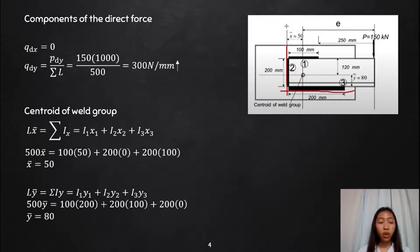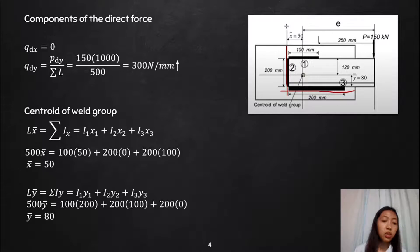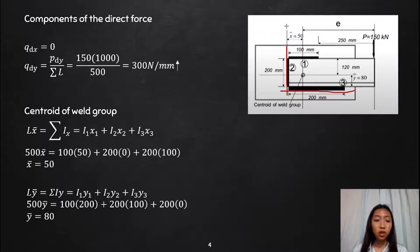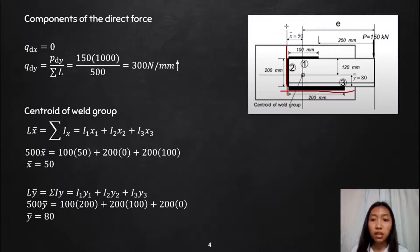In terms of y: L × ȳ = ΣL_i × y_i = L₁y₁ + L₂y₂ + L₃y₃. So: 500 × ȳ = 100 × 200 + 200 × 100 + 200 × 0. Ang ȳ natin is 80 mm. Ipaplot na natin kung nasaan yung centroid natin — in terms of x, we have 50, and ȳ = 80. Makikita nyo dito yung bilog — ito na yung ating centroid of the weld group.